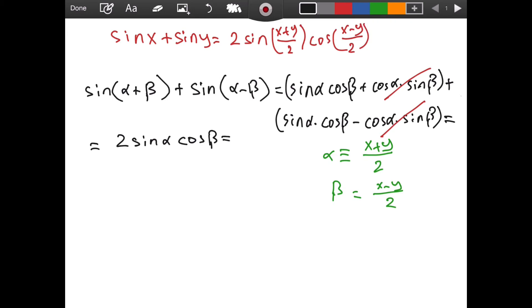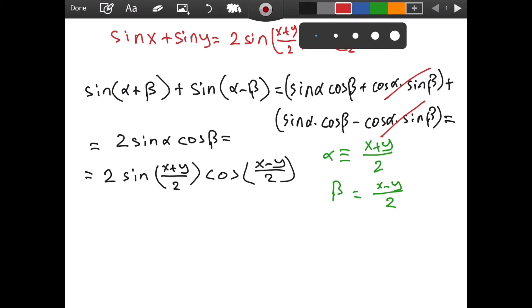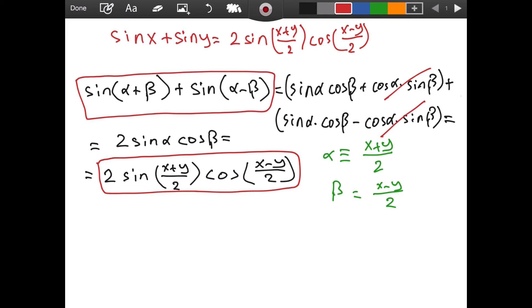Okay, so if you continued or didn't stop at all, that is fine as well. We get two sine of x plus y divided by two—I am just substituting for alpha and beta—and then times cosine of x minus y divided by two. So this thing in the box is equal to this sum.